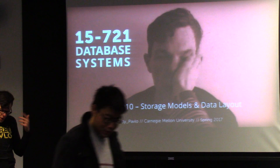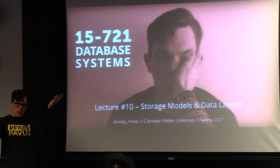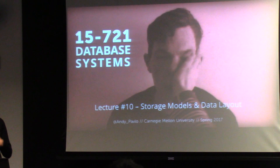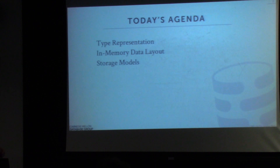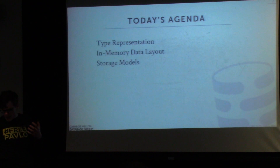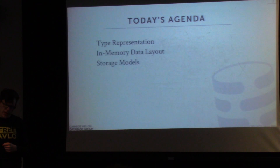Here is an overview of where we're going in the course. We're going down into the stack, from the higher-level parts of Concurrency Control and Index Management. Now we're going to the lower levels of the Storage Manager — how database systems actually store data in memory. For today's lecture, we'll start with how we represent different data types, how we lay out data in memory, and then finish with the different types of storage models.